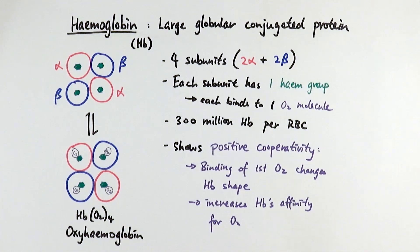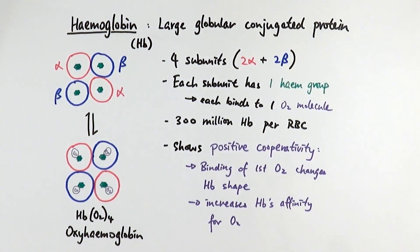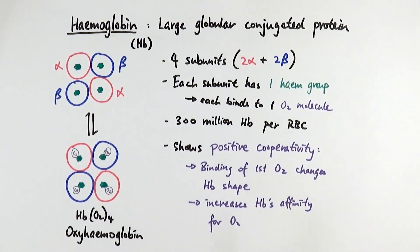Today we're going to look at the structure of haemoglobin and something called positive cooperativity, which is a very crucial thing that haemoglobin can do in order to bind to oxygen and hence transport it. We'll start with the structure of haemoglobin.